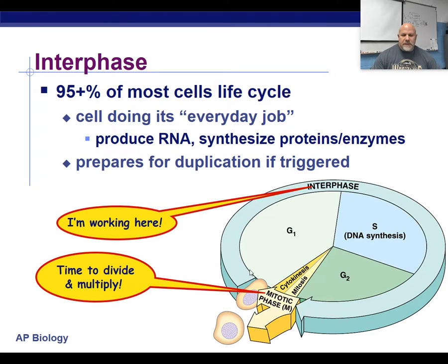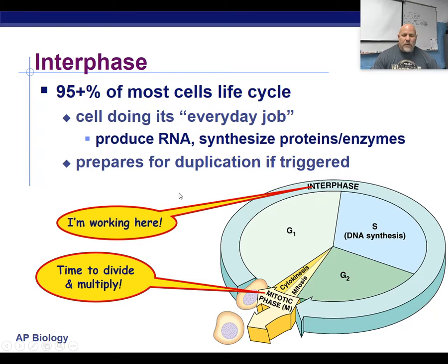The cell is going to spend most of its time in what we call interphase. Interphase is G1, S, and G2. Most cells are in G1 most of the time, and it's not unless they get a signal to divide that they will move into S and G2. Some cells will divide more often, so those signals might come every day. Other cells, it might come every six months or every couple of years, just when necessary.